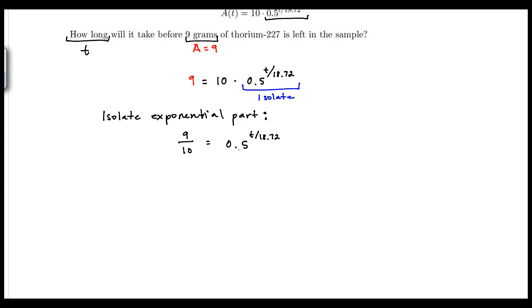So now that I have isolated my exponential part, real number on the other side, the next step was to rewrite in logarithmic form. Meaning that if I have log base half of the value 9 tenths equal to the exponent T over 18.72.